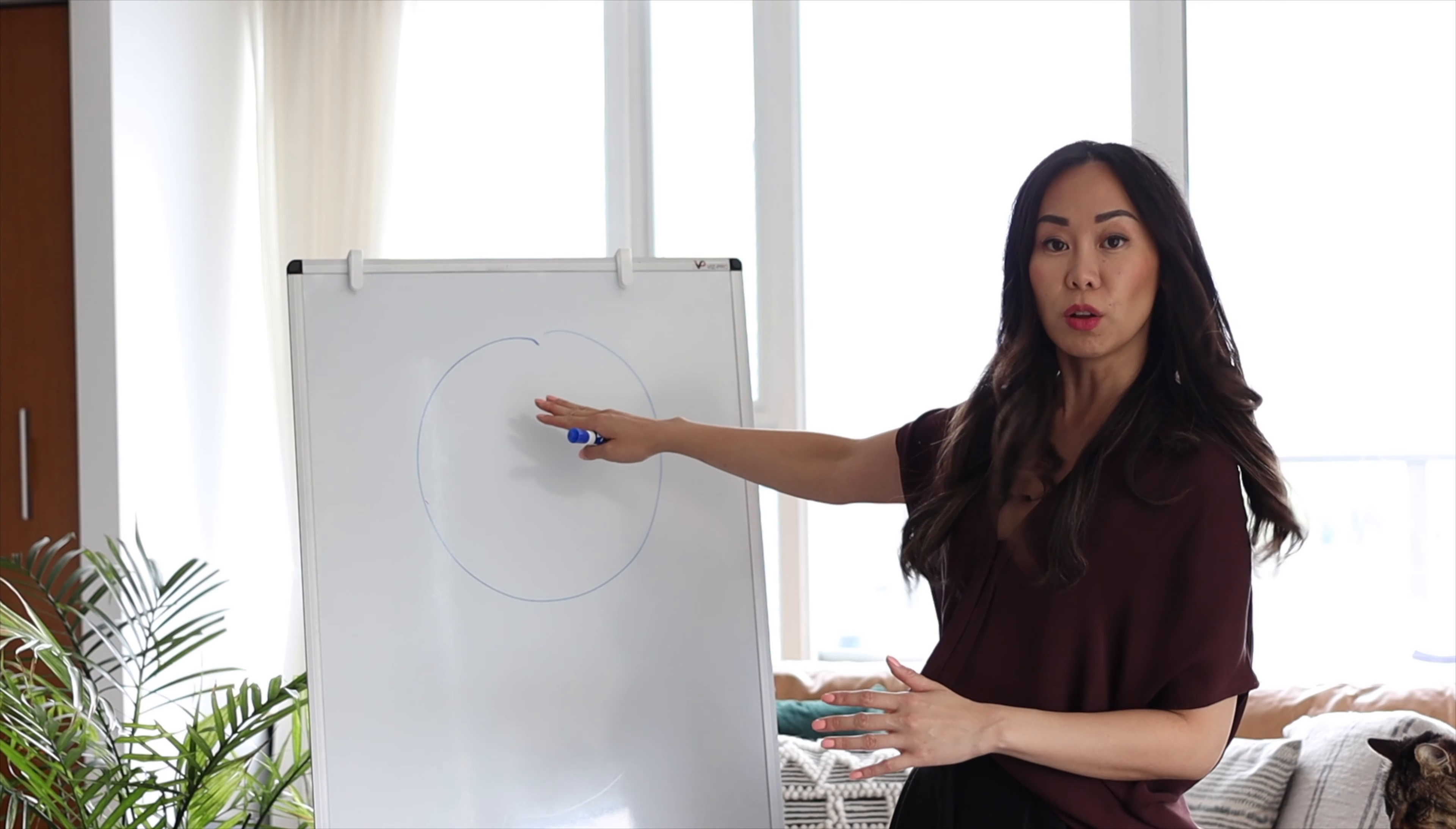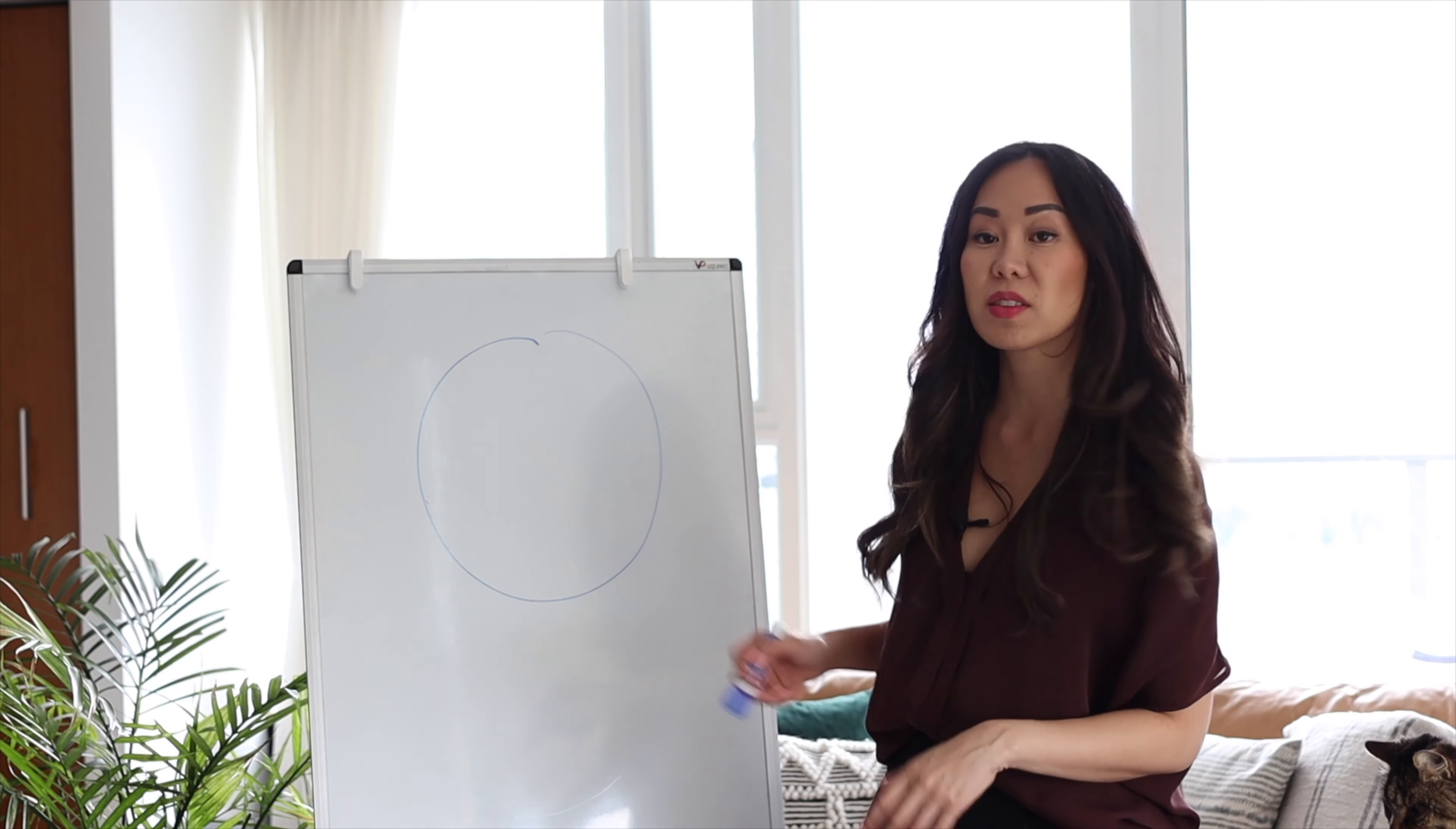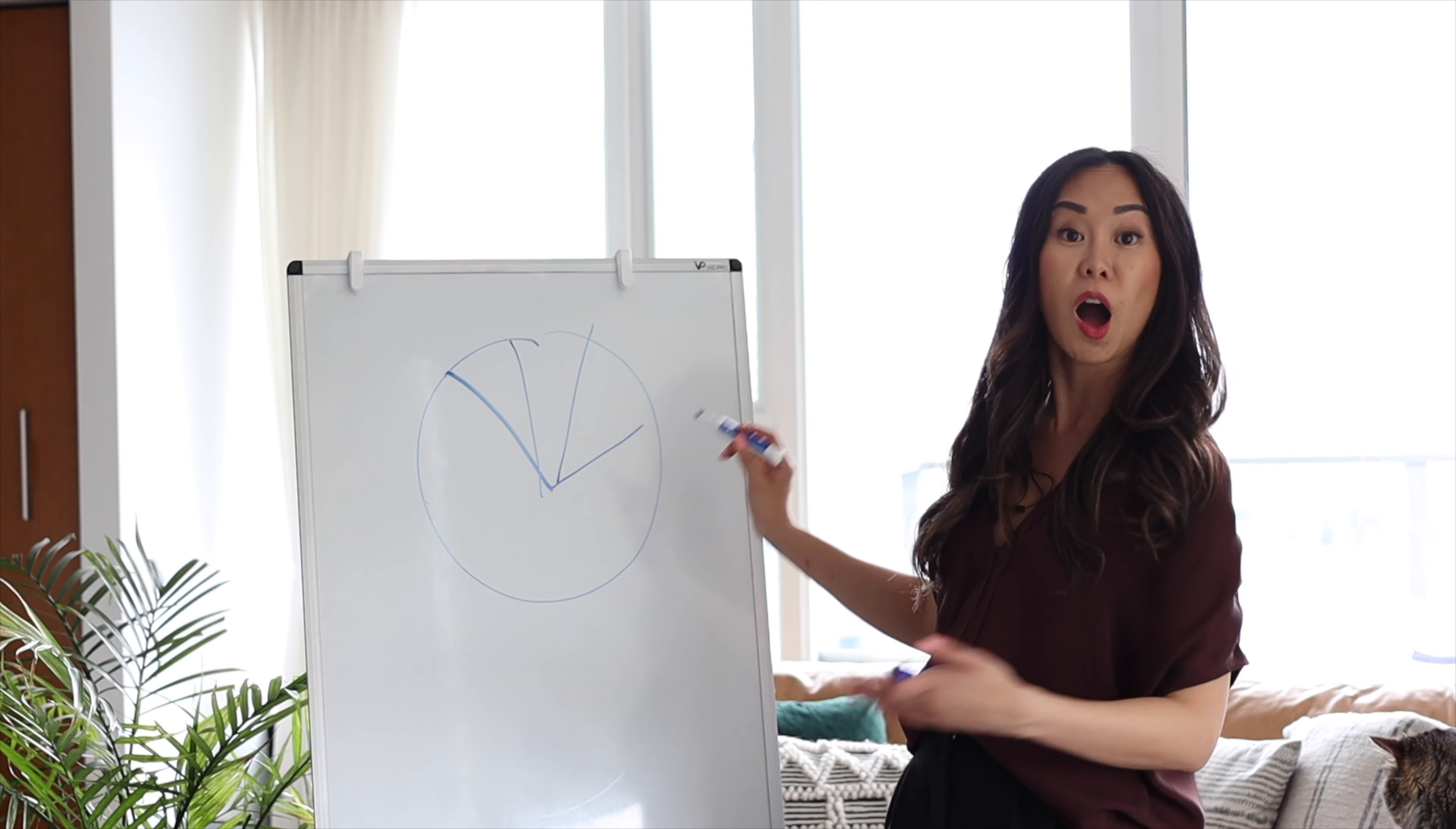In the circle, draw the slice that represents how much was devoted to your partner. After that, fill in the rest of the pie with other things that you devoted your time and energy to. Maybe it was friends or community or work or hobbies.